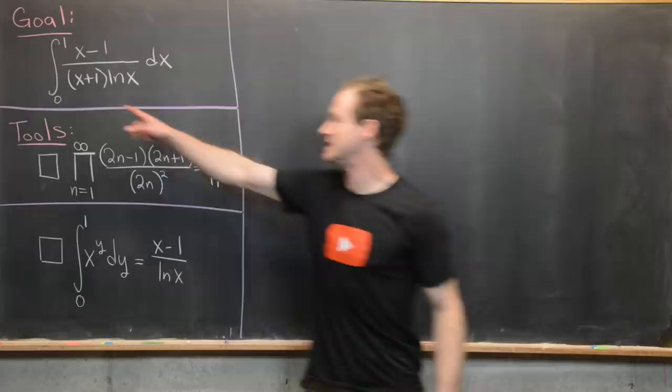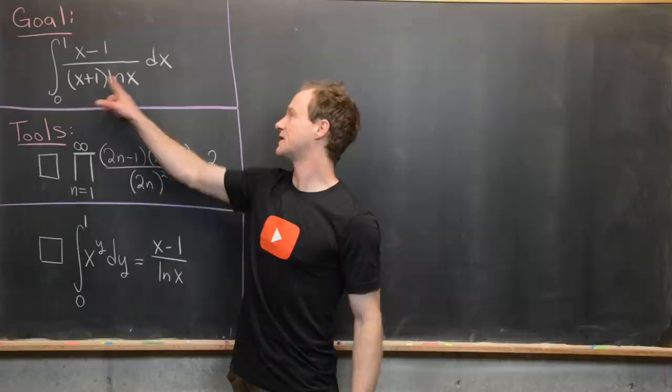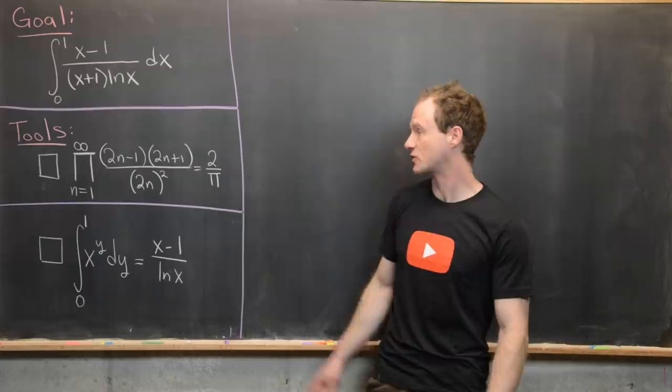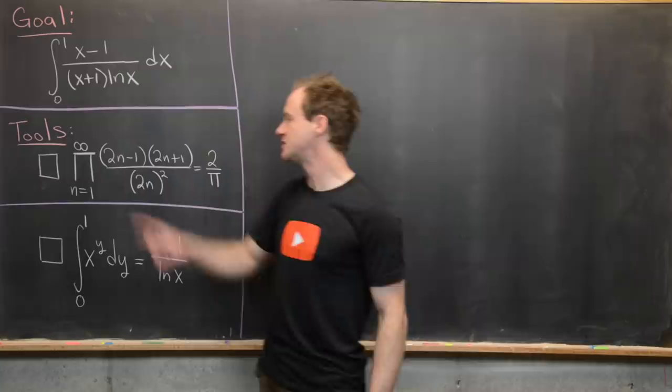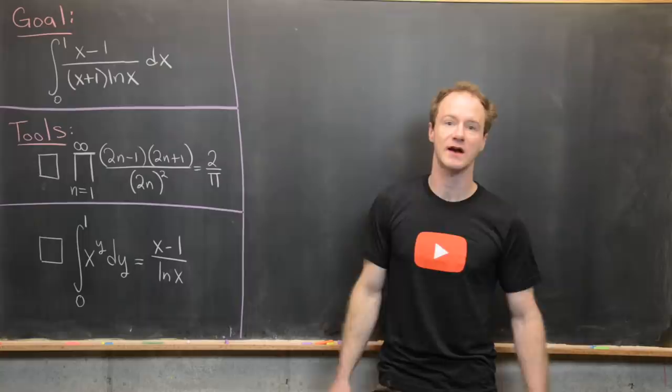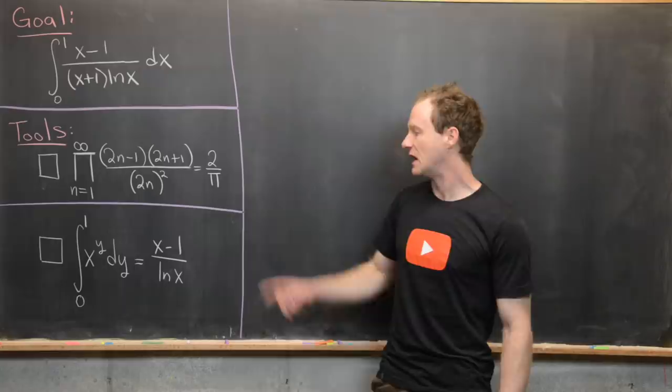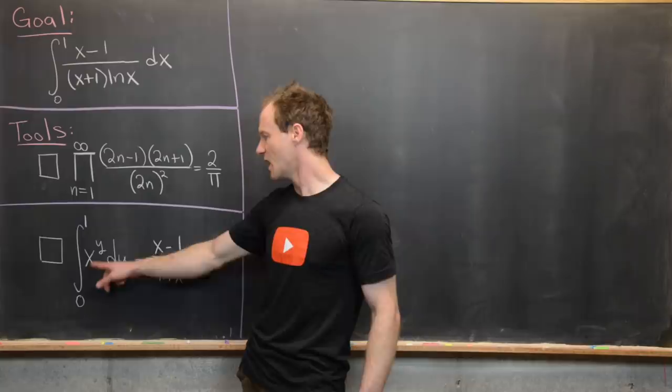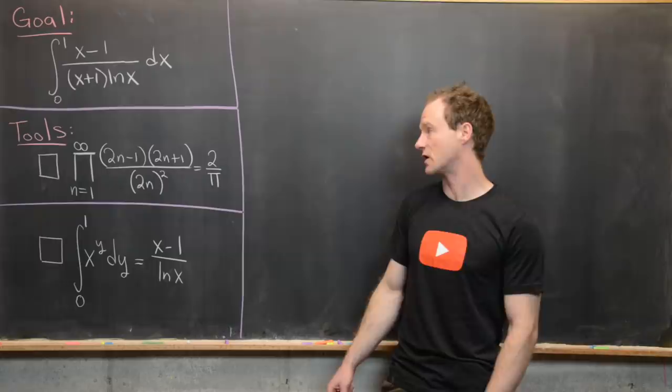Here we're going to look at a pretty interesting integral: the integral from 0 to 1 of x minus 1 over x plus 1 times the natural log of x. We're going to use two tools to evaluate this. The first is the Wallis product, the product as n goes from 1 to infinity of (2n minus 1)(2n plus 1) over (2n)^2, equal to 2 over pi. The second tool is that the integral from 0 to 1 of x to the y dy equals x minus 1 over the natural log of x.